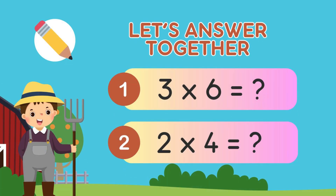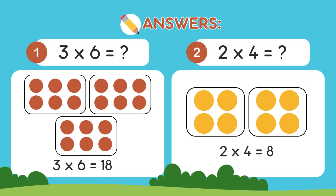Let's answer together. 3 times 6 equals... and 2 times 4 equals... Answer: 3 times 6 — 1, 2, 3 groups. There are 6 circles in each group. What about 2 times 4? There are 2 groups and inside are 4 circles.